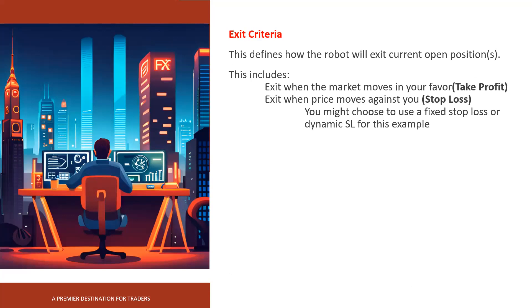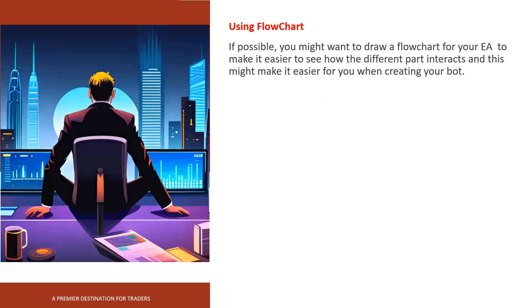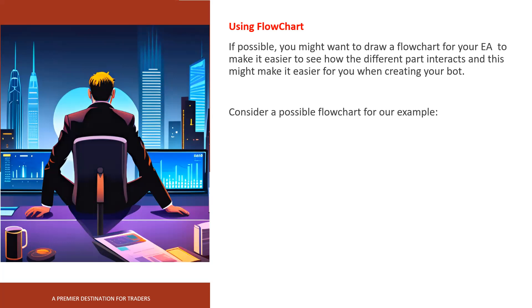What we've just done is simplify the whole idea behind our trade — even a layman can understand what we are trying to accomplish. Now I'm going to show you something that can be quite helpful: using a flowchart. We'll take what we've just discussed regarding building the EA and break it down into a flowchart to illustrate what steps need to be done and what needs to happen before each step is taken. For our moving average crossover bot, let's look at what a flowchart would look like.